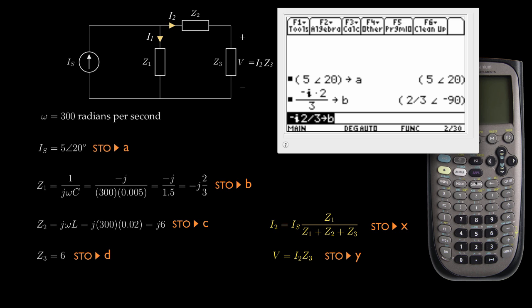Next I'll store impedance Z2 in C, so that's going to be i times 6, and I'm going to store that in C.